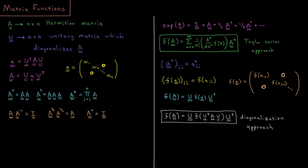There are other powers we could take a matrix to as well. The inverse of a matrix is the matrix which, when multiplied by it, gives an identity matrix — so the inverse is like taking it to the minus first power. Additionally, you could imagine some matrix where if you multiply that matrix by itself you get A, which would be the square root of the matrix. So there's some matrix which is the square root of A.